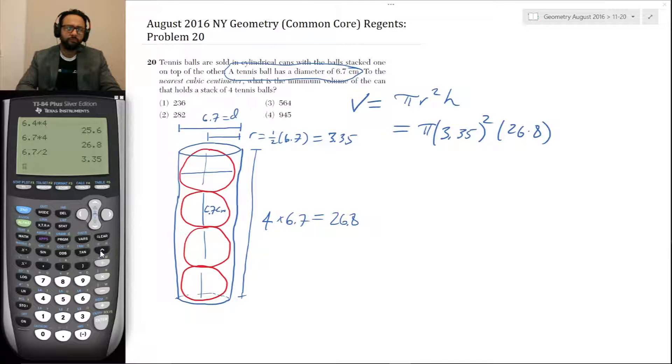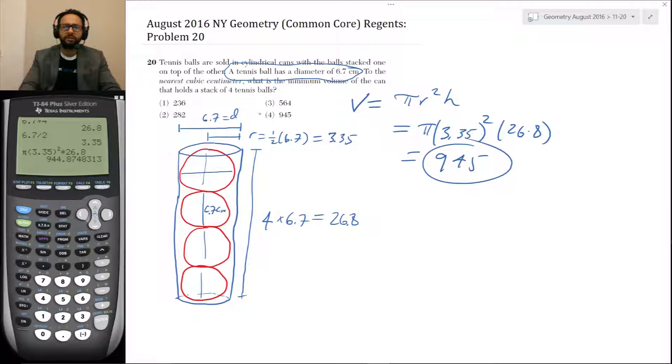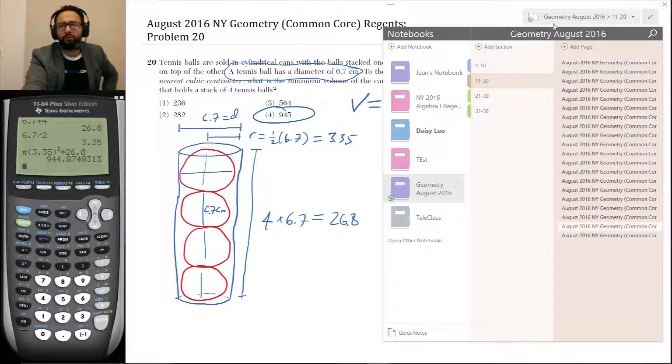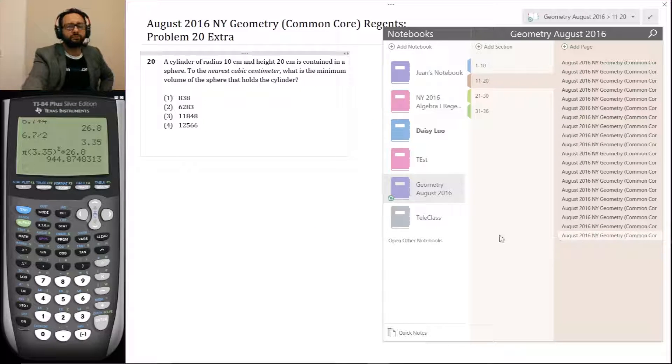So the volume is then pi times the radius is 3.35 squared times the height is 26.8. And let's see. Pi, 3.35 squared times 26.8. Okay. And these are all rounded to the nearest one. So 945. So that's our answer. If your goal is to get the answer to number 20, then definitely hit the next button so you can see the answer to number 21. But we did create a problem that could help you review these kinds of concepts. I'll tell you a tougher version of this problem.